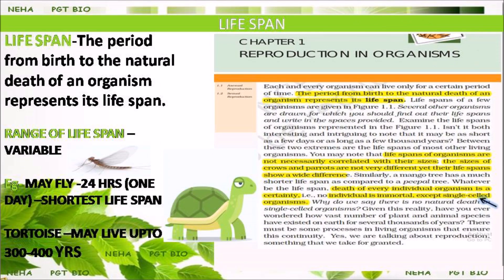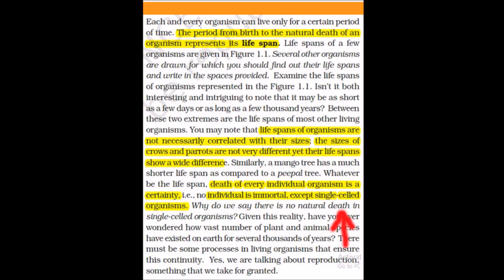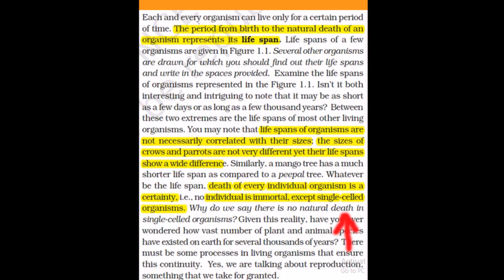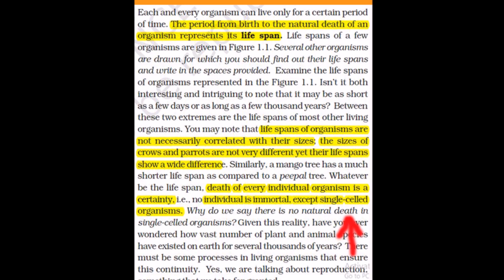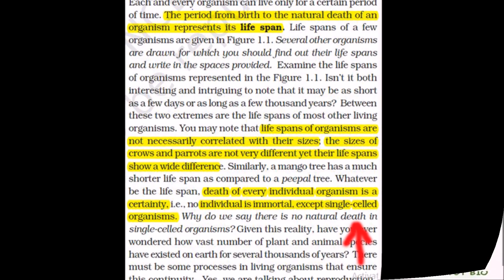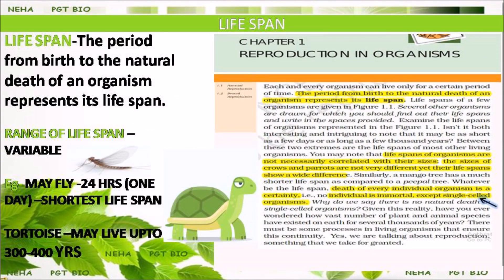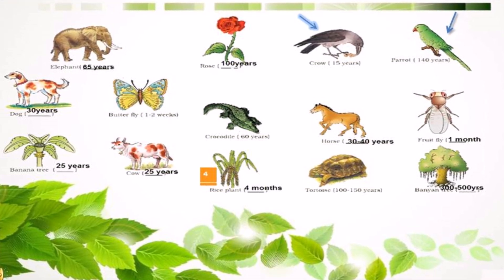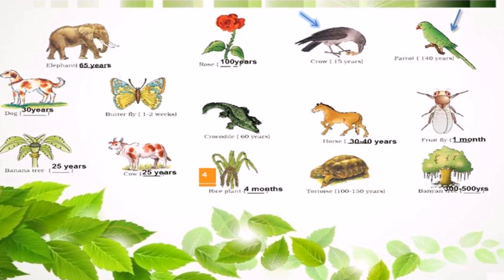There is one line written in your NCERT book: no individual is immortal except single-celled organisms. This means organisms that divide by binary fission are considered immortal — because one organism divides into two, those two grow into adult organisms and divide again, and the process continues. That's why single-celled organisms are said to be immortal.